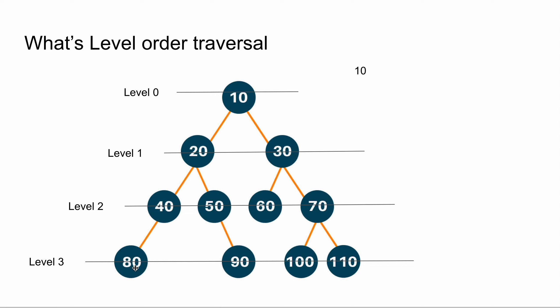Similarly, 80 — how far is it from the root node or 10? 1 edge, 2 edges, 3 edges, so they will be at level 3. So what is level order traversal? In level order traversal, you'll be printing the elements level by level.